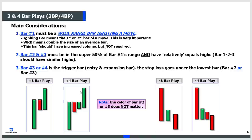Bar number two and three must be in the upper 50% of bar number one. If this wide range green bar is $1, the red resting bar has to be in the upper 50 cents - the upper 50%. Otherwise it's not a resting bar, it's an engulfing bar. For a four bar play, bars two and three both have to be in the upper 50%. It's preferable if they're in the upper 25% or 30% - the smaller this bar is, the better.